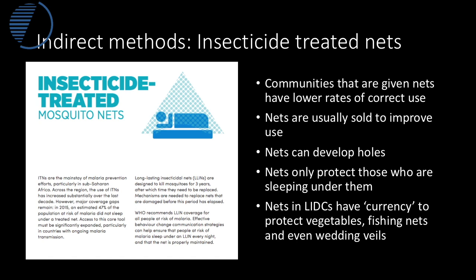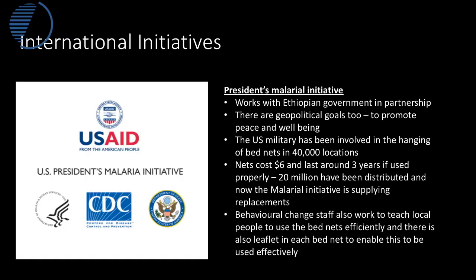Nets have been misused as vegetable nets, fishing nets, and even wedding veils, making these programmes complicated to implement. It's not just the Ethiopian government involved — they work with other governments and NGOs, including the US President's Malaria Initiative, which has distributed over 20 million nets across 40,000 different locations on a rolling programme to renew them over time. This has been really key for reducing the infection rate.